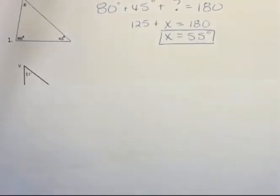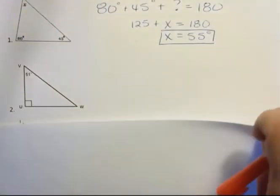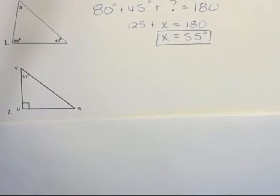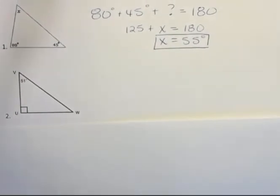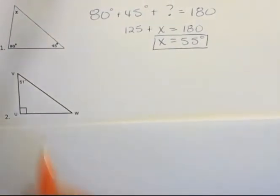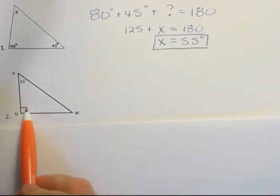Let's look at the next one. And the next one is a little different because they aren't giving you two of the three. They're giving you one angle. And then they also give you this little box down here. And what is that little box mean? That means 90 degrees and we have a right angle or 90 degree angle.